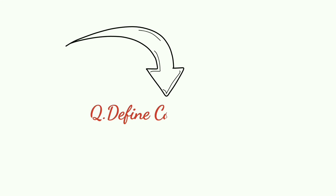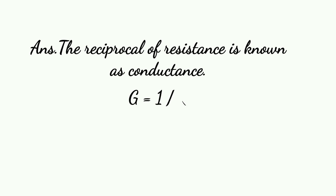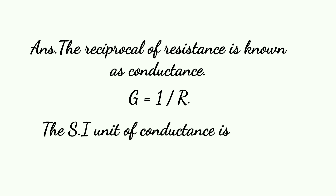Today we will discuss the three most important definitions. Number one: define conductance. Conductance is the reciprocal of resistance. So G equals to 1 upon R, where R is resistance. The SI unit of conductance is Ohm-inverse or Siemens.